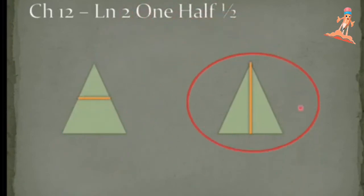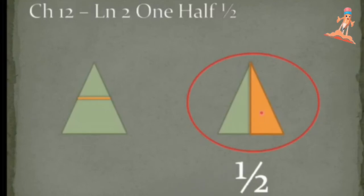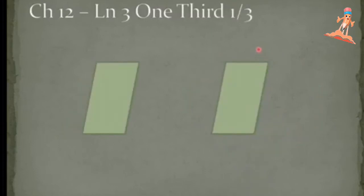If I am coloring one equal part, then I get one-half — that is half. One half of this shape. Understood, kids? Yes! Good job. Now we shall move on to Lesson 3: One Third.